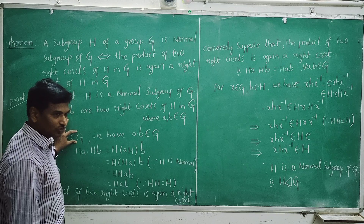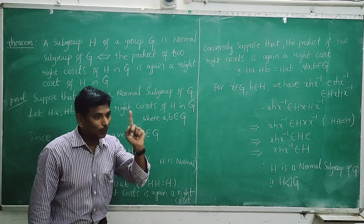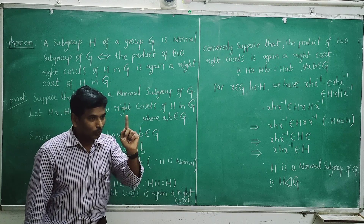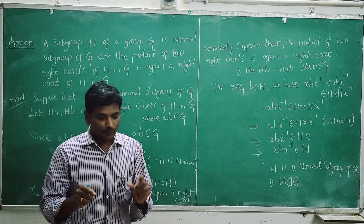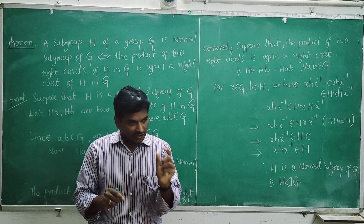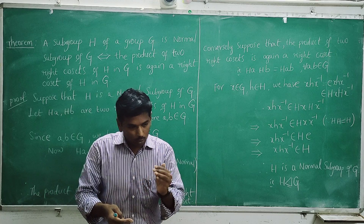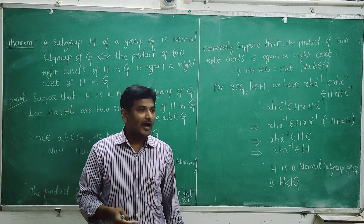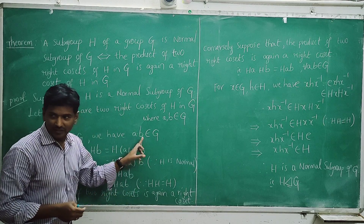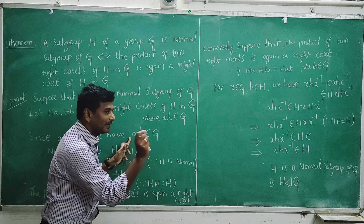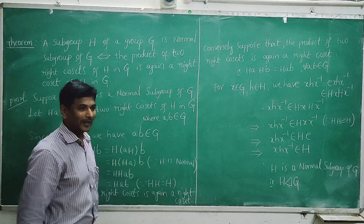Since a and b belong to G, and G is a group with the closure property, if a, b belong to G, then the product ab also belongs to capital G.